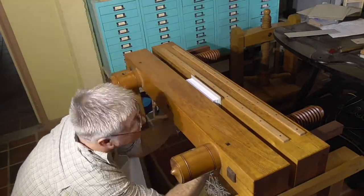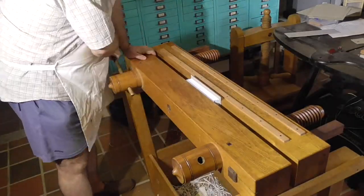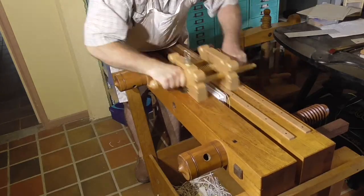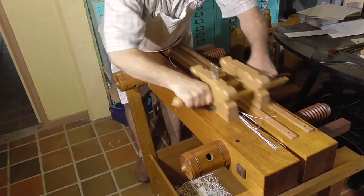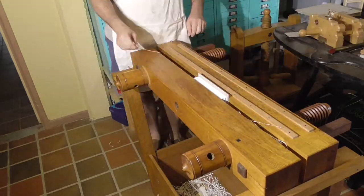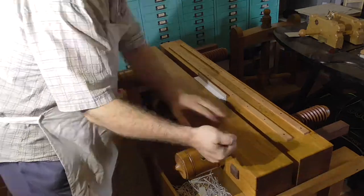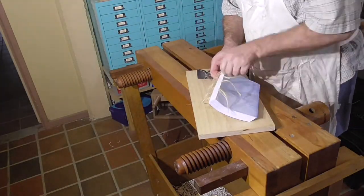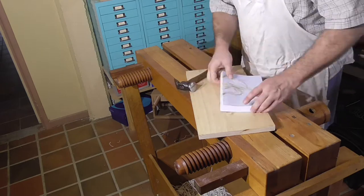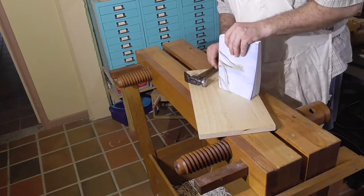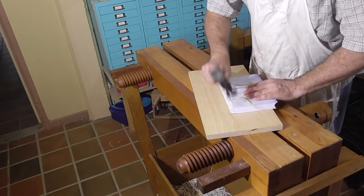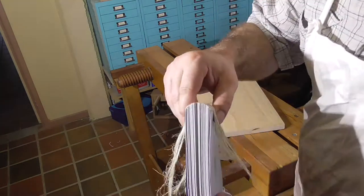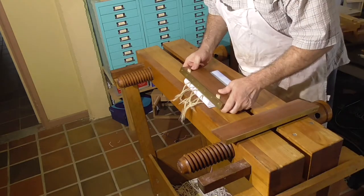The order I'm going to execute this work is I'm going to trim the fore edge first, then I'll round the book, then I will back the book. I'll put the shoulders on the book and then I'll trim the head and the tail. You could trim the head and the tail after rounding the book and then back the book, put the shoulders on the book. But I prefer the order I mentioned first, because then you've got the book in its final shape before trimming the head and the tail. And then if you do any edge decoration, there'll be no disruption to that decoration by the backing process.